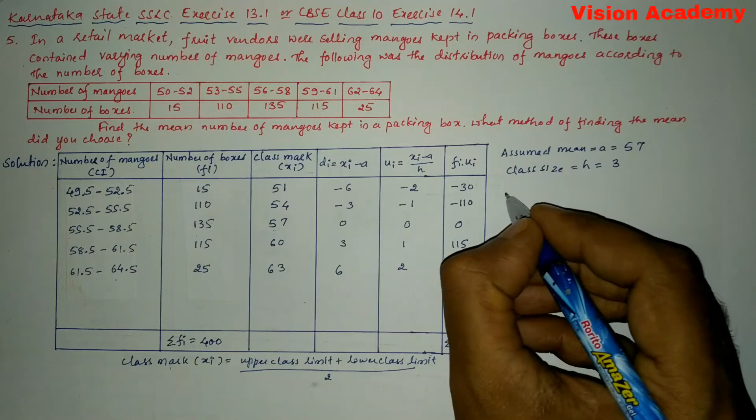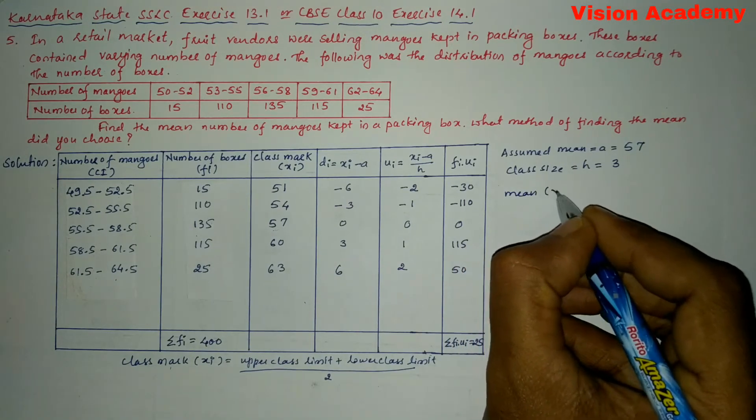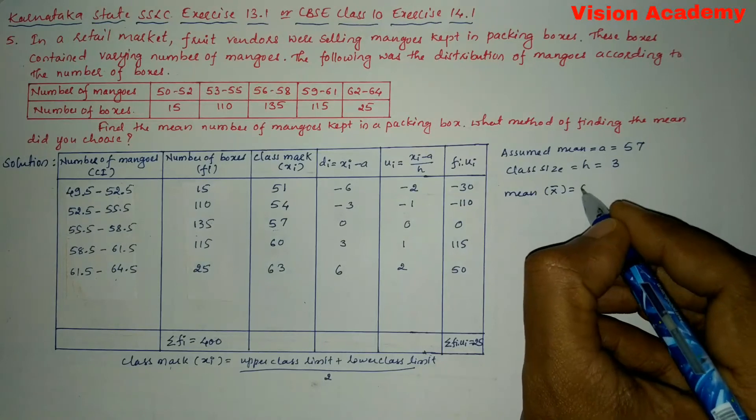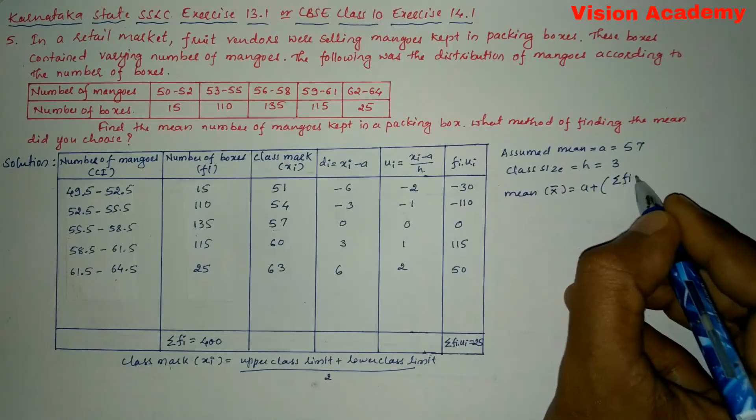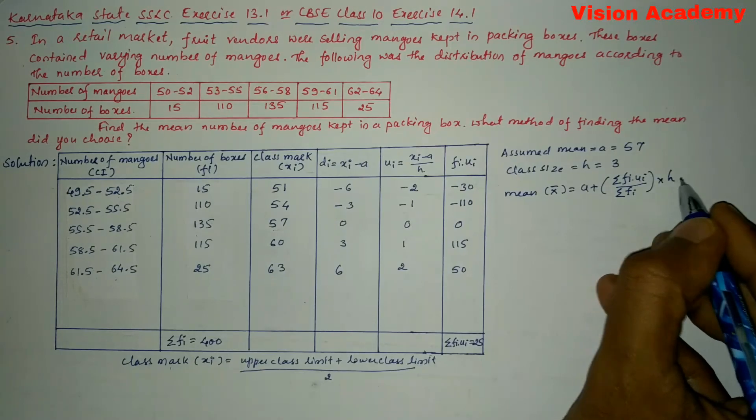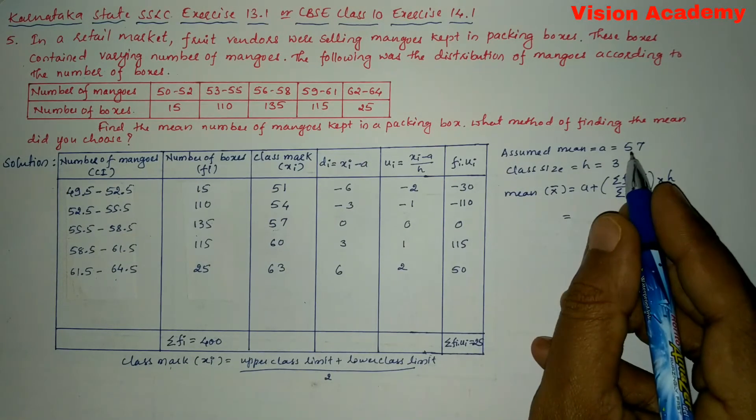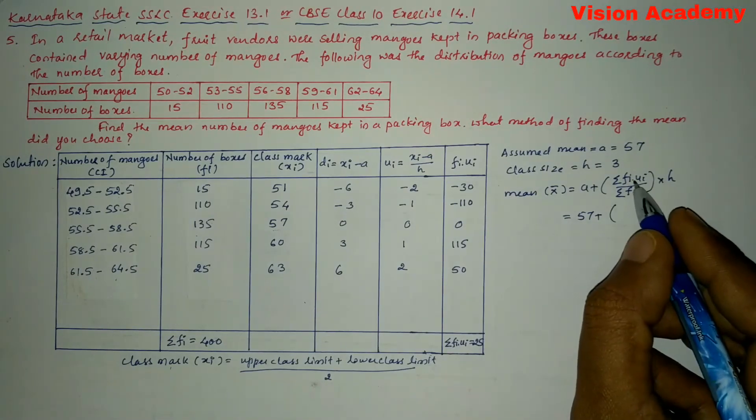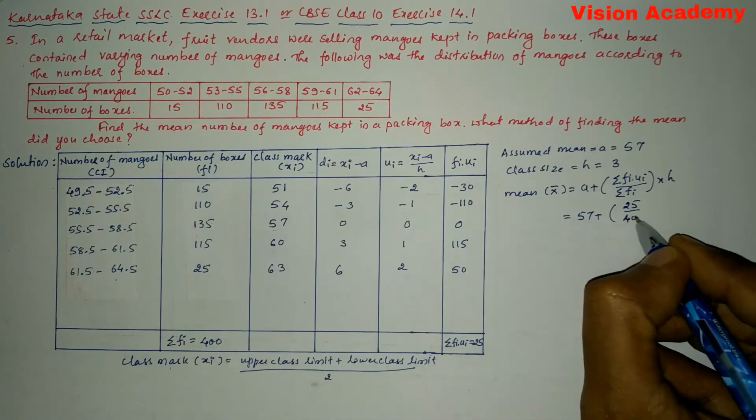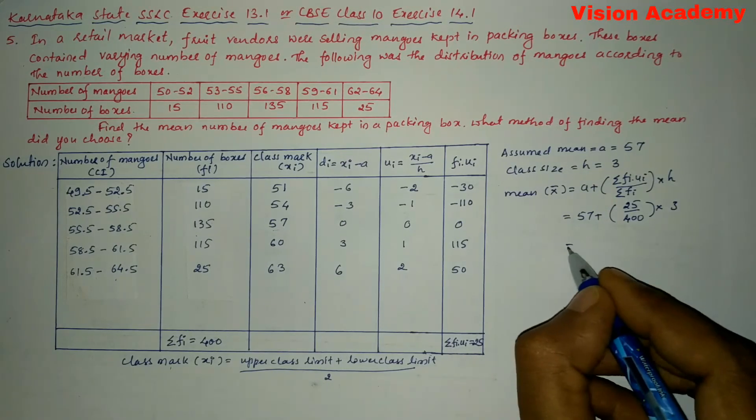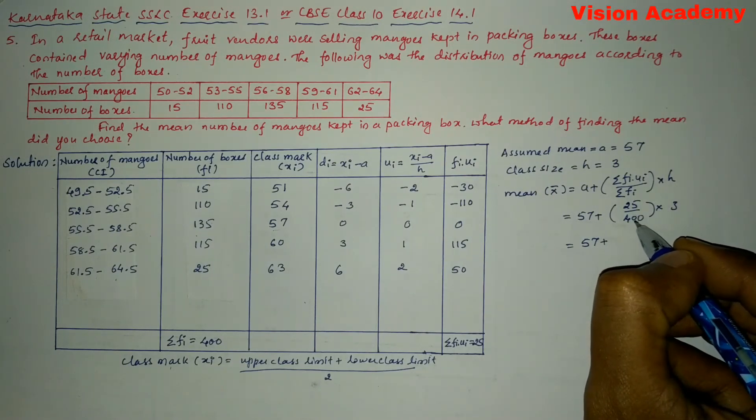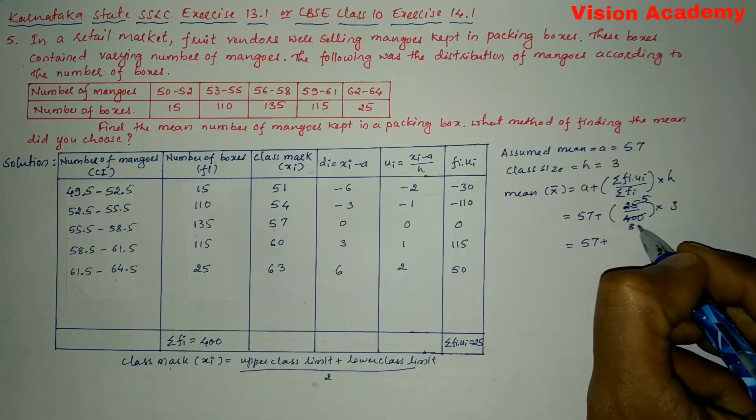Now let us find mean. Mean can be denoted as x bar is equal to, we will write the formula to calculate the mean using step deviation method is a plus summation of fi into ui divided by summation of fi into h. So let us substitute a is 57 plus we will write here summation of fi ui is 25 divided by summation of fi is 400 into h is 3. Now let us further simplify 57 plus here this 25 will get divided by 400.